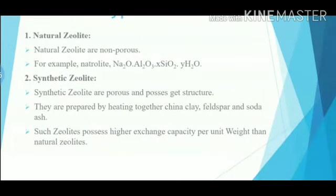Now, types of zeolite. There are mainly two types of zeolite: first is natural zeolite and the second one is synthetic zeolite. Now, what is natural zeolite? Natural zeolites are non-porous. For example, natrolite.